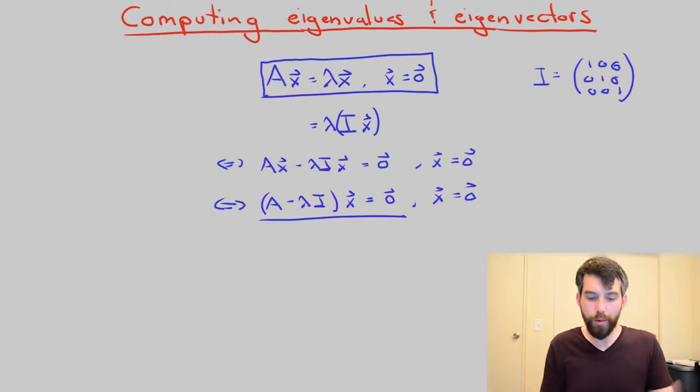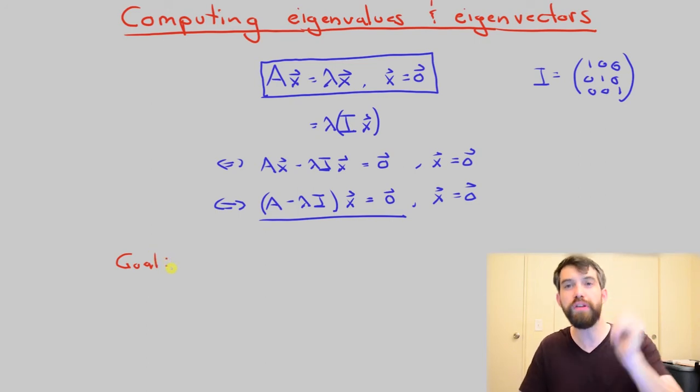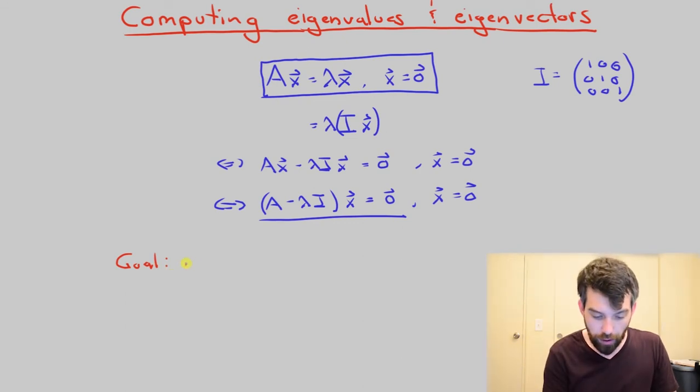So what really is my goal here? I am trying to find a non-trivial solution. I'm not interested in the x equal to zero solution. I know that's a solution. That's easy. The question is, are there other solutions? So my goal is a non-zero solution to a homogeneous system.